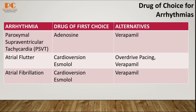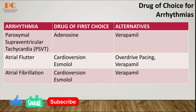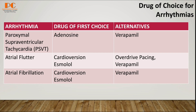For atrial flutter, we can choose cardioversion and esmolol as the first choice drugs. Cardioversion is a medical procedure that restores the cardiac rhythm or heart rate. Esmolol is a beta blocker. And for alternatives, we can choose overdrive pacing — meaning atrial pacing or a pacemaker which controls heart rate — and verapamil, a calcium channel blocker.